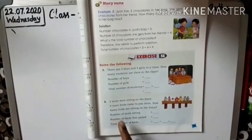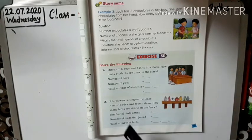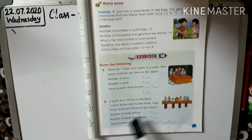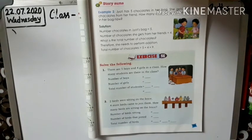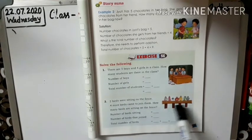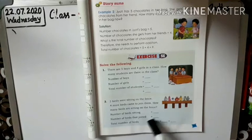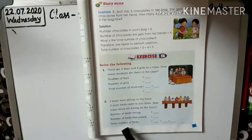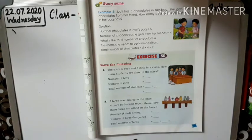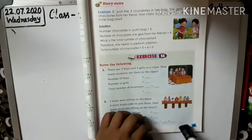Next, number 2: 2 birds were sitting on the fence. 5 more birds came to join them. How many birds are sitting on the fence? Number of birds sitting: 2. Number of birds that joined: 5. Total number of birds: 1, 2, 3, 4, 5, 6. So total number of birds is 6.